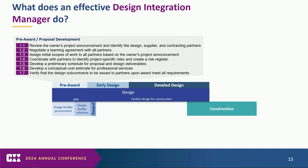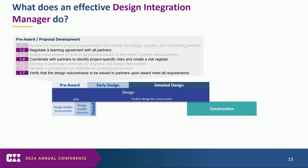In the pre-award phase, there were seven tasks assigned to the design integration manager. Because this role is interfacing with so many different partners and trying to bridge design and construction, a lot of the more important tasks focus on the teaming aspect — making sure partners are bought in, helping to identify risks early on, especially during the pre-award phase, and making sure that if the project is awarded, everyone's going to hit the ground running. Every phase throughout has its own set of tasks, all summarized in the actual resource.